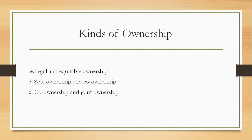Ownership recognized by law is legal ownership, and ownership recognized by equity is equitable ownership. In many cases, equity recognizes ownership where law does not, owing to some legal defect. For example, if A, the owner of shares in a company, transfers these shares to B who pays the consideration, but a proper transfer deed required by the rules of the company is not executed, the company refuses to recognize B as the holder of shares. Law may give no relief to B as the legal requirements of transfer have not been complied with. However, equity can step in and provide that though A is still the legal owner of the shares, he holds them as a trustee for B and must give B all the dividends and other amounts realized on account of the shares.